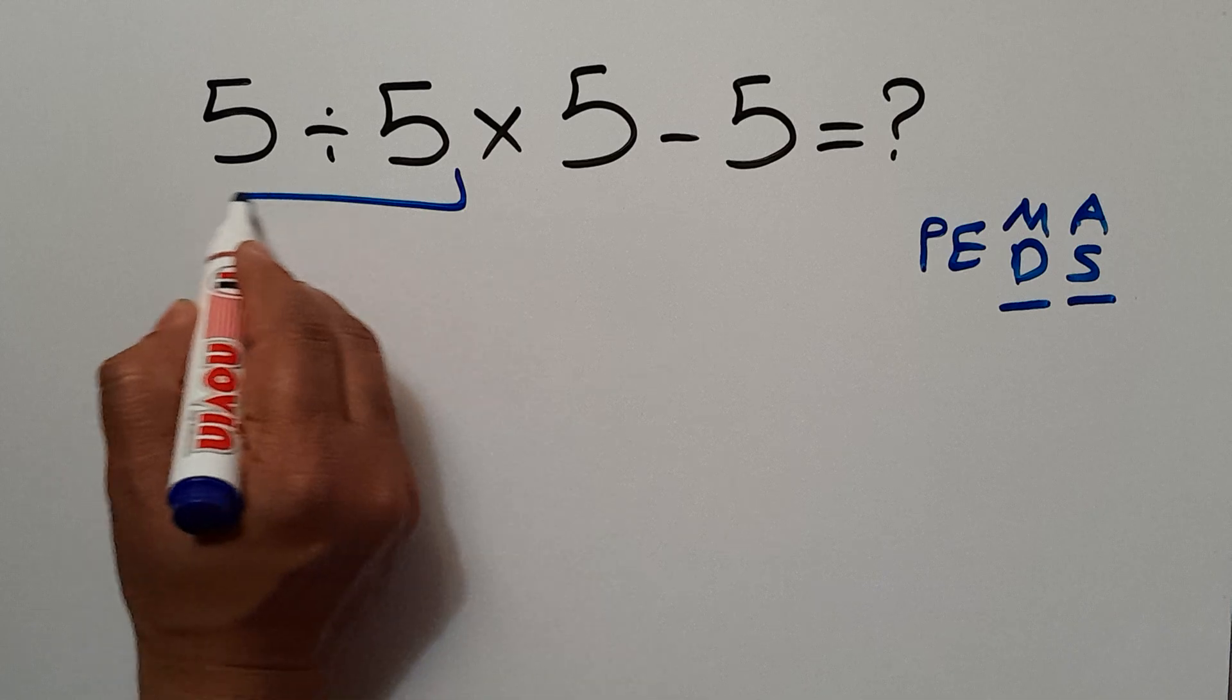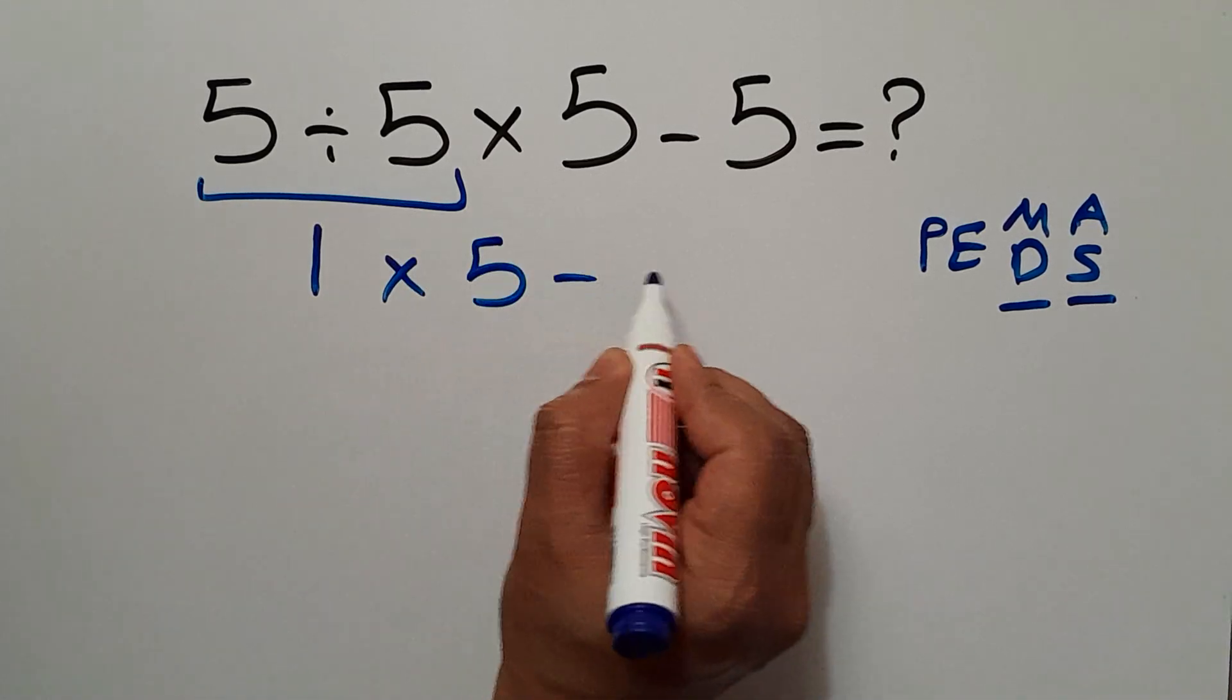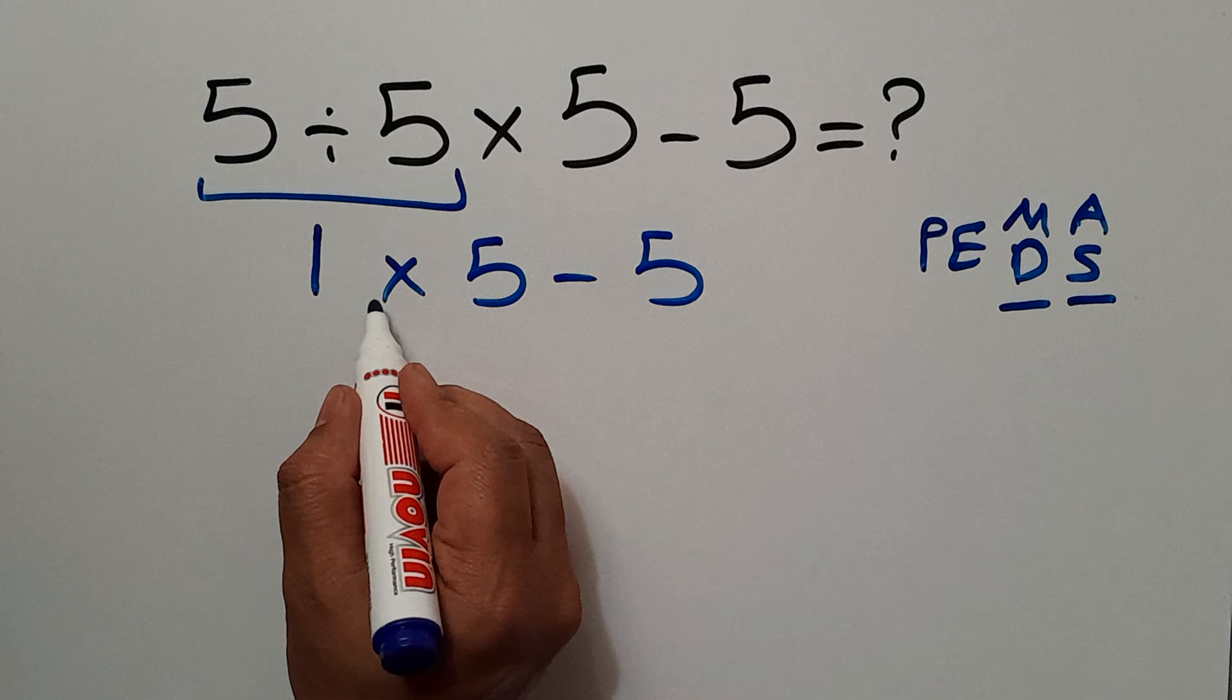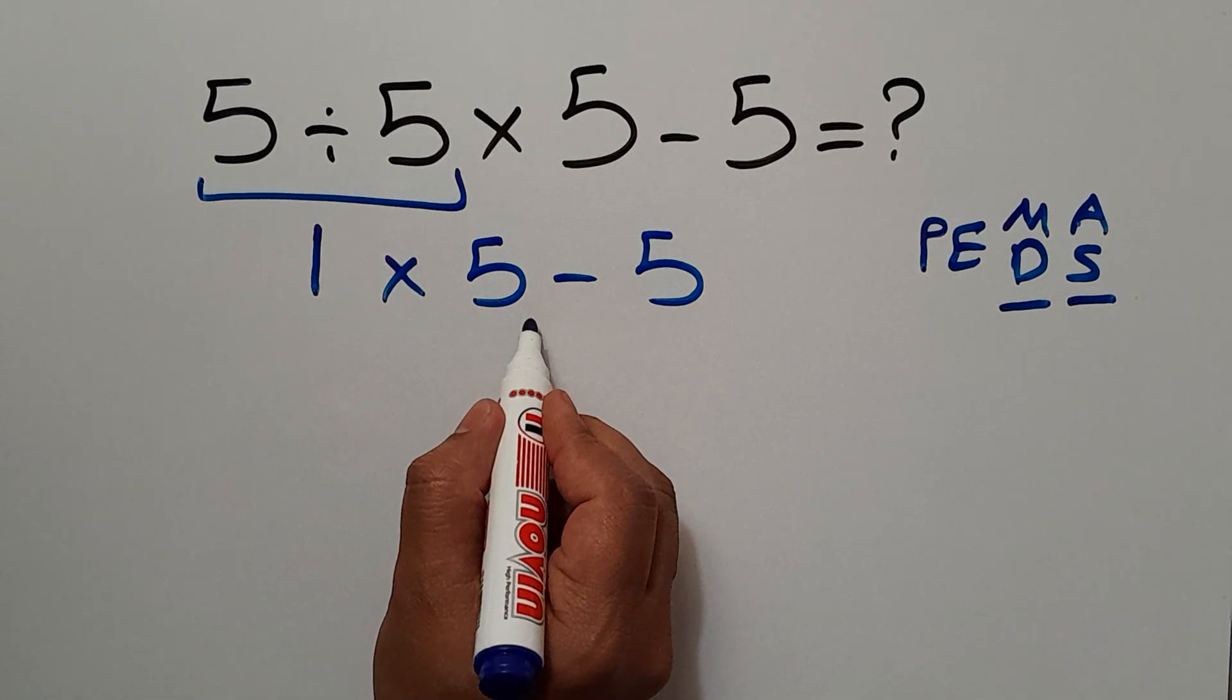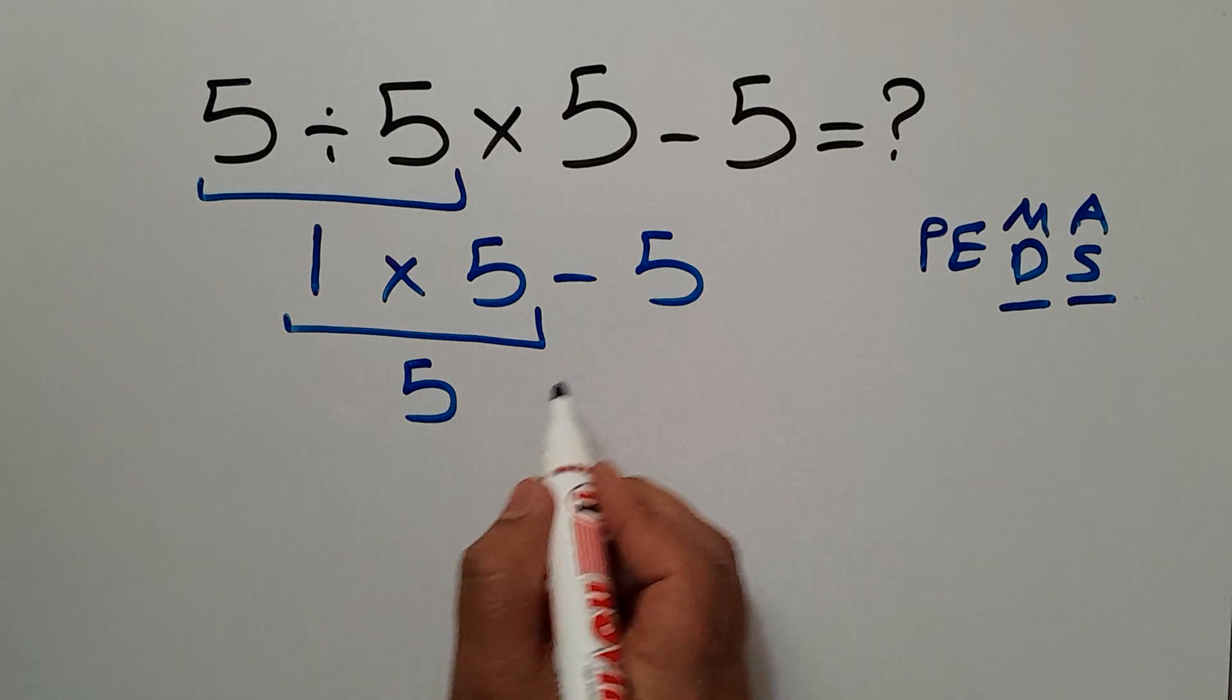5 divided by 5 is just 1. So 1 times 5 minus 5. Now, we have to do this multiplication. 1 times 5 is 5. So 5 minus 5.